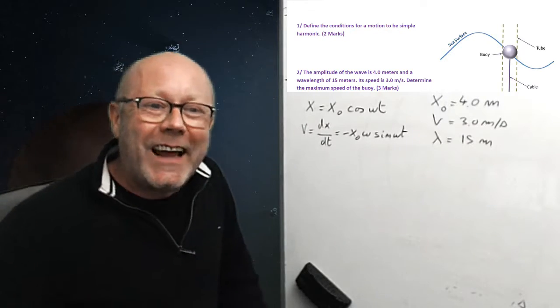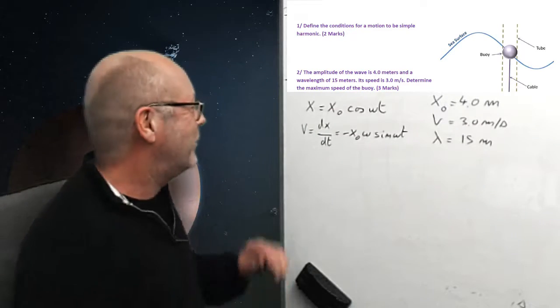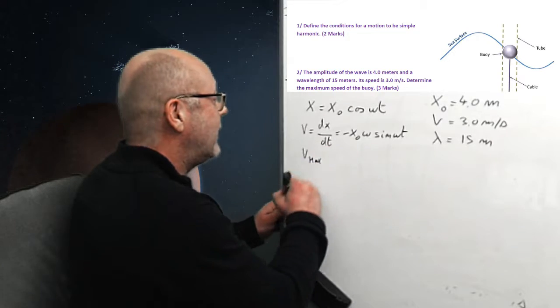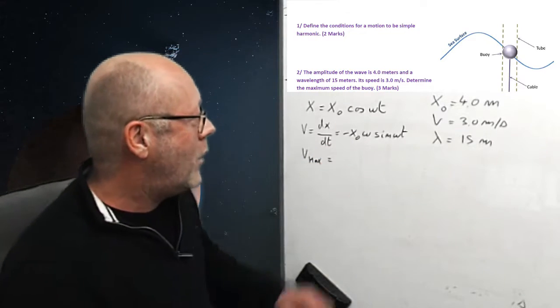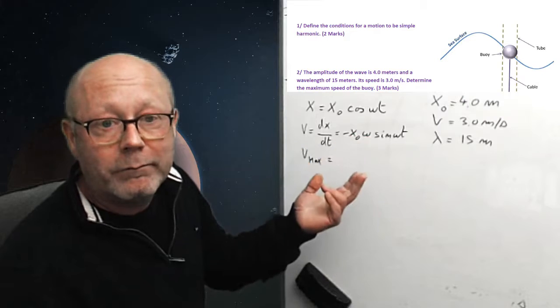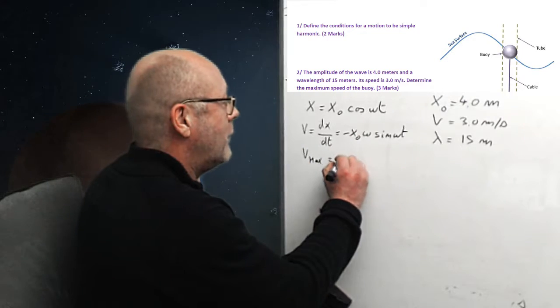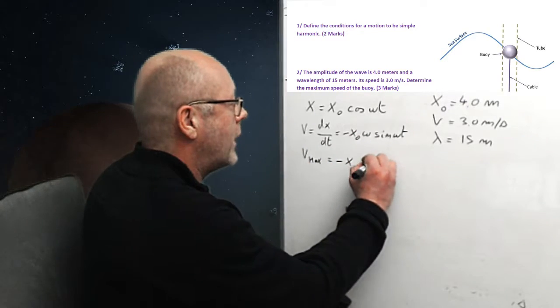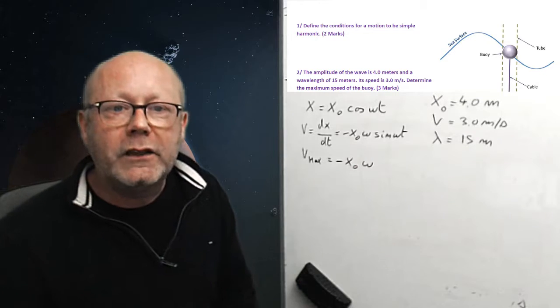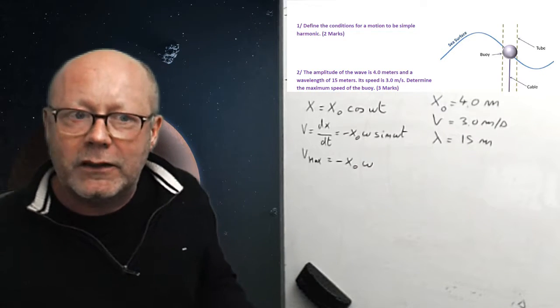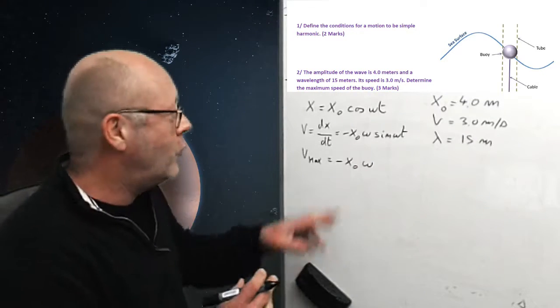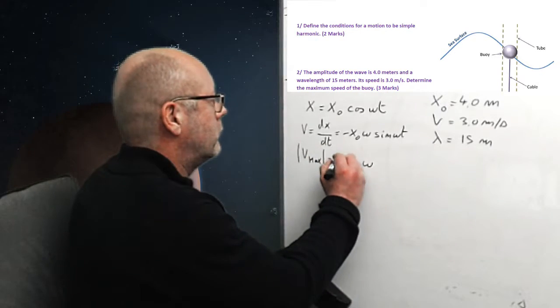Right. But what we're interested in, actually, is the maximum velocity. The max. When does this happen? Well, when the sine is 1. Right? So, we've got vmax equals minus x0, omega. We're interested in the speed, actually, not the velocity. So, we're just interested in the absolute value.